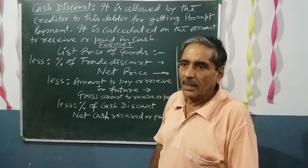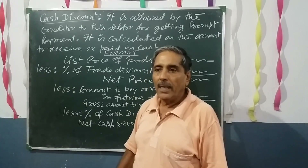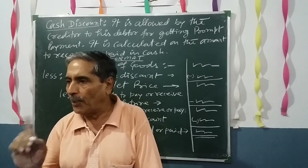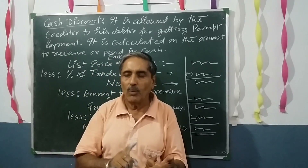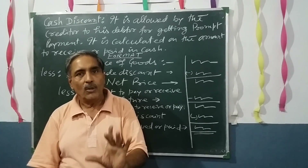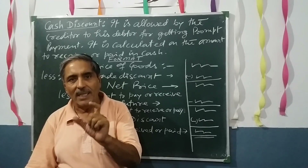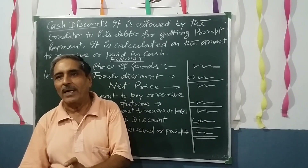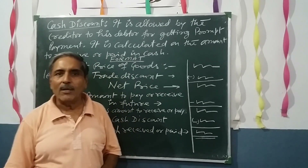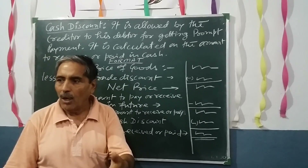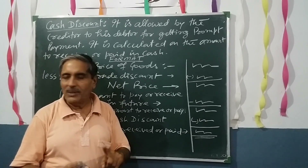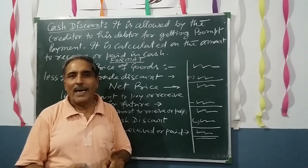Another type of discount is cash discount. Cash discount is always allowed by the trader to his debtor for getting prompt payment. Prompt payment means you tell your customer that if they pay within one week — you give 7 days — only if they are ready to pay within that period will you give them a discount, which is known as cash discount. It is calculated on the amount to be paid or received in cash, from both the purchaser's and seller's point of view.